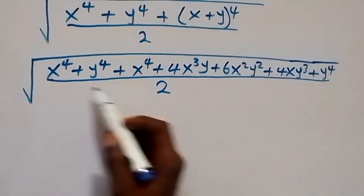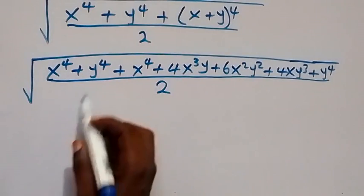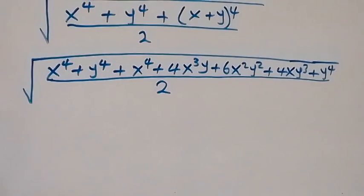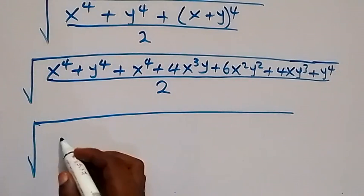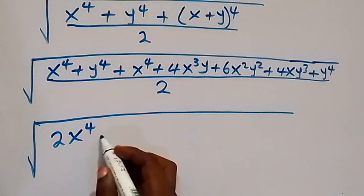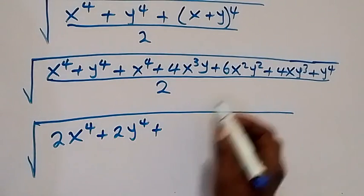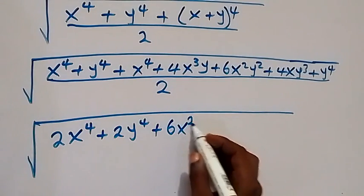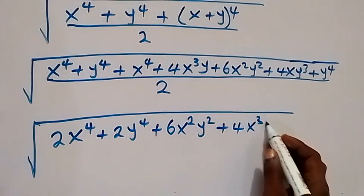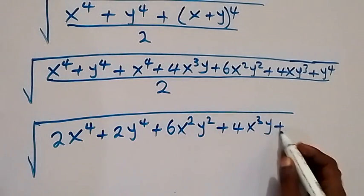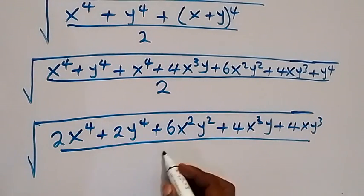Looking at the expression, we have two lots of x⁴ giving 2x⁴, and two lots of y⁴ giving 2y⁴. So we can write this as: square root of 2x⁴ plus 2y⁴ plus 6x²y² plus 4x³y plus 4xy³, divided by 2.